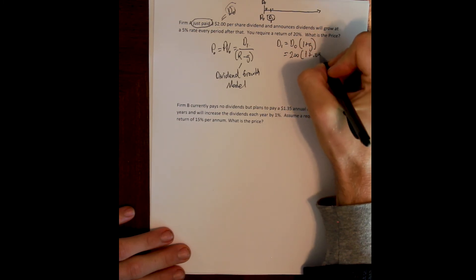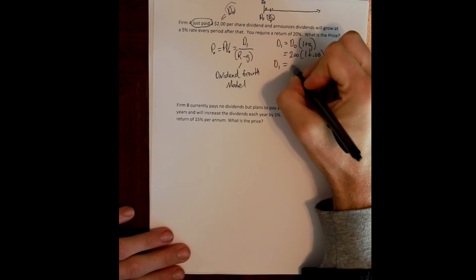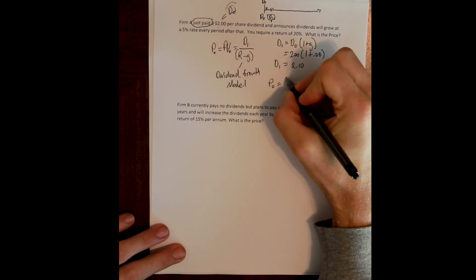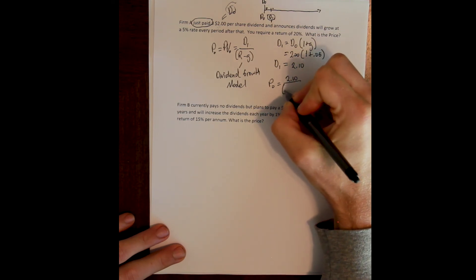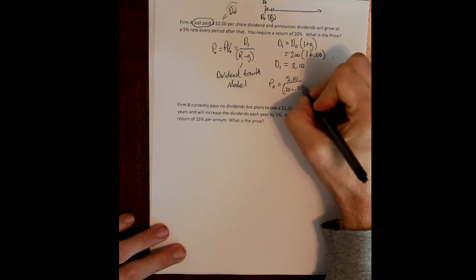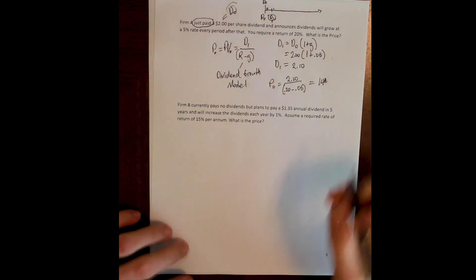Now we can plug that into the model and solve. The price today is the next dividend that we should receive divided by the discount rate, the required rate of return, minus the growth rate, and that should give us a price of this share of stock of $14.